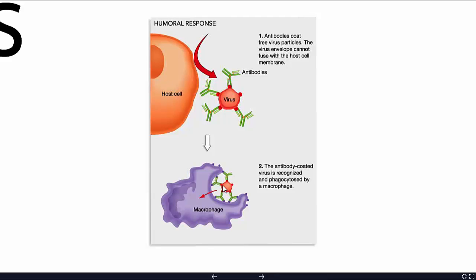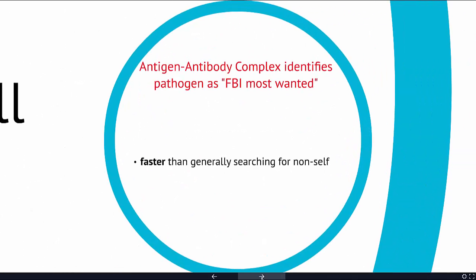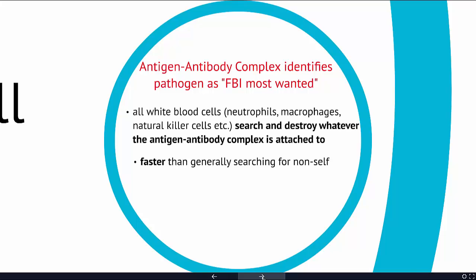When you have this antigen-antibody complex, the macrophage doesn't need to spend time checking whether those proteins belong — it just engulfs it. This is a faster immune response that also prevents future infections. Think of the antigen-antibody complex as putting a pathogen on the FBI most wanted list. Now every kind of white blood cell is on search and destroy — it's much faster than generally searching for non-self.